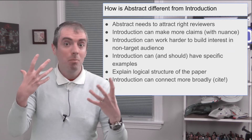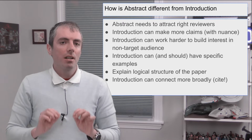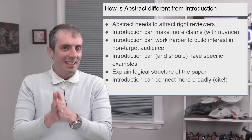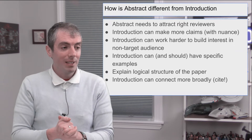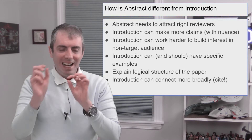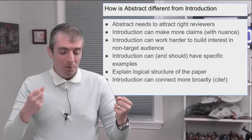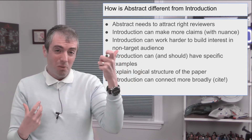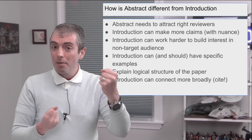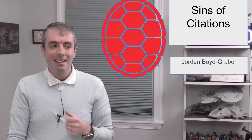You don't have space for concrete detail in the abstract — it's pretty abstract by nature. The introduction can and should be much more concrete. A motivating example is usually a good idea in the introduction. It also explains the logical structure of the paper and can connect the work more broadly: where the abstract has just one sentence of context, the introduction can connect ideas from other fields and explicitly contrast with other work.